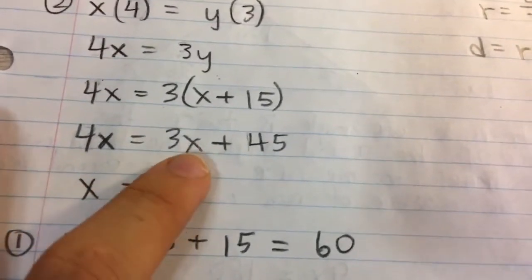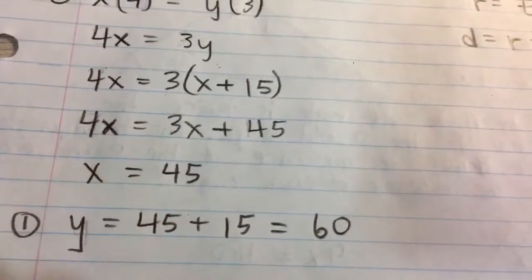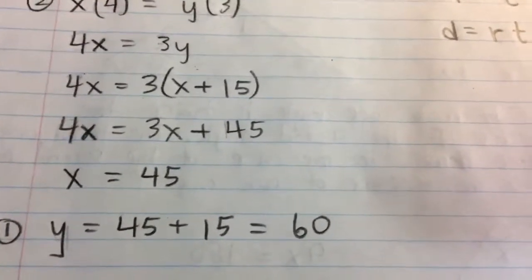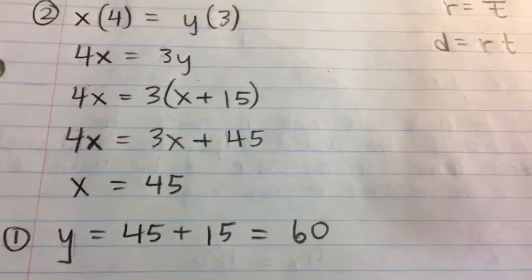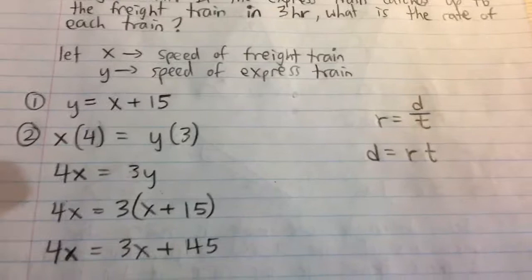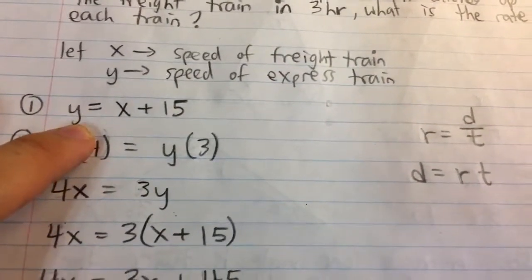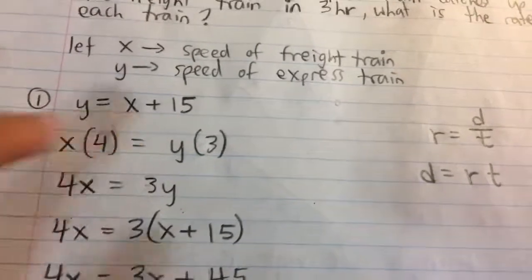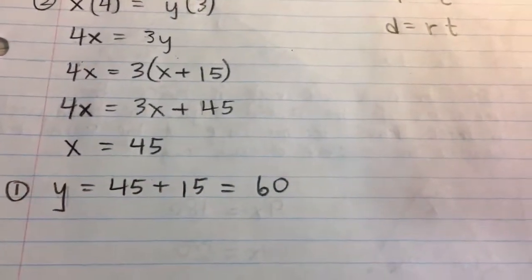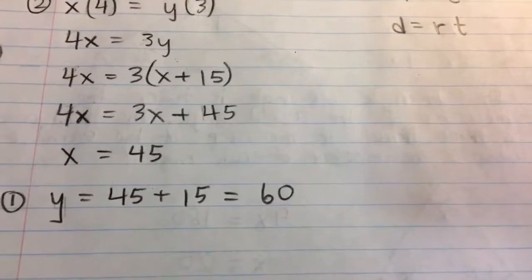Now if we subtract 3x from both sides, 4x minus 3x is just x, so we can see that x is 45. That's the speed of the freight train. To get the speed of the express train, we're going to use this equation. The speed of the express train is x plus 15, in other words, 45 plus 15 or 60 miles per hour.